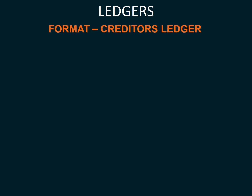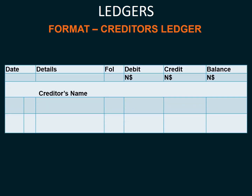The same applies to the creditor's ledger. It will also have the date, the details, the folio, the debit side, the credit side, and the balance. Every creditor will have their own creditor's ledger.